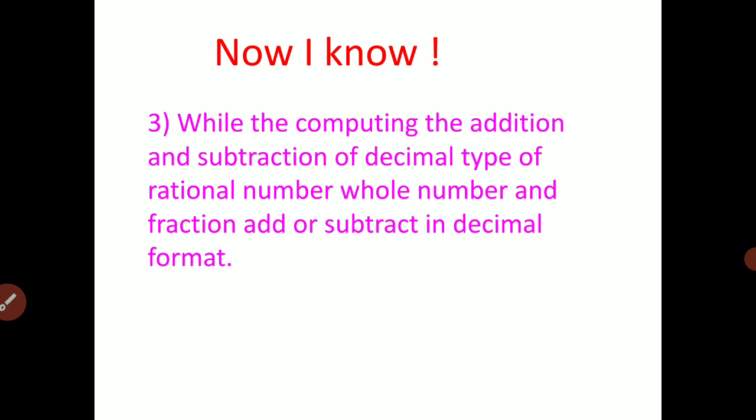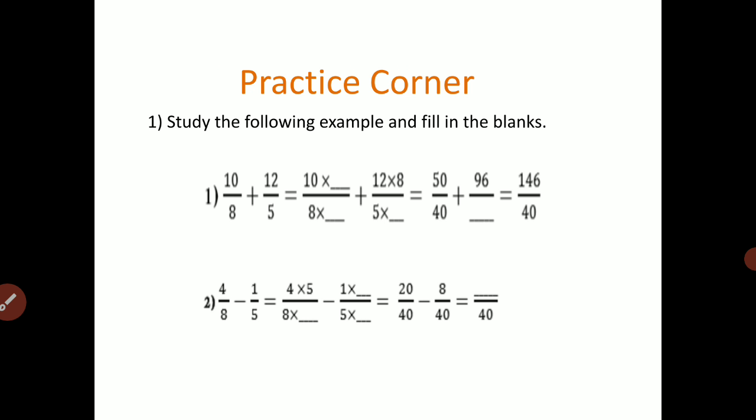These are the three key points of today's lesson. Some examples are given for your practice. Study the following examples and fill in the blanks. The first example: 10 upon 8 plus 12 upon 5 — here the denominator is different. The second example: 4 upon 8 minus 1 upon 5 — here also the denominator is different. By studying the above three examples you can fill in the blanks easily.